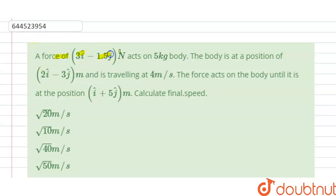A force of 3i cap minus 1.5 j cap newton acts on a 5 kg body at position 2i cap minus 3 j cap meter and traveling at 4 meter per second. The force acts on the body until it is at position i cap plus 5 j cap meter. Calculate the final speed.